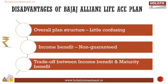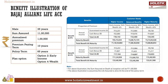Disadvantages: the overall structure of the product is a little confusing unless you read the full brochure; the income benefit is non-guaranteed; you need to trade off between income benefit and maturity benefit. Generally, a benefit illustration will be provided in the policy brochure to understand the cash flow and other special features. This plan can be customized as per your requirement since you can choose two options in a desired proportion, resulting in a number of combinations.